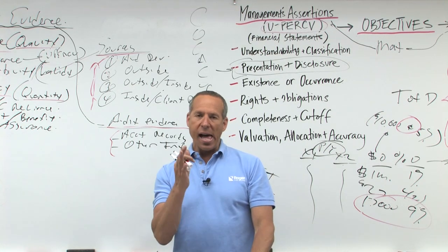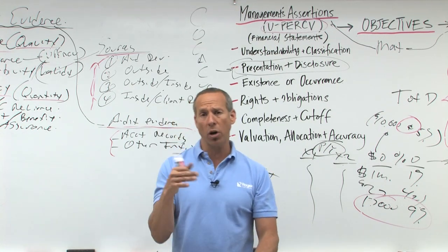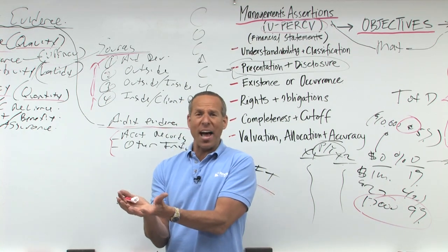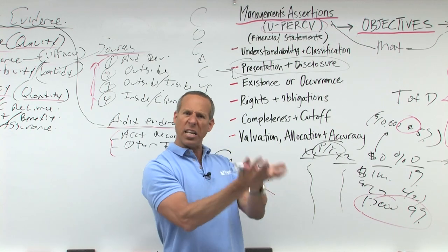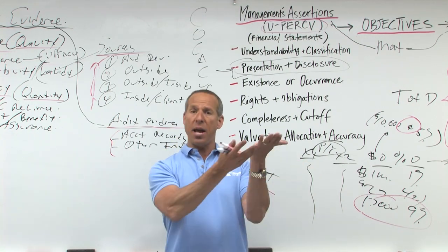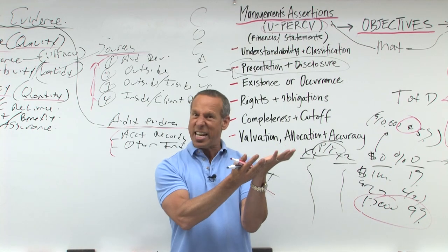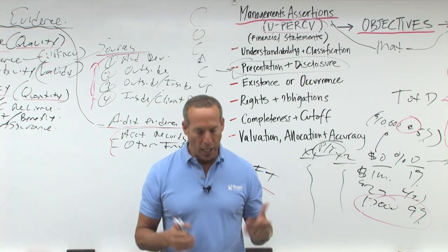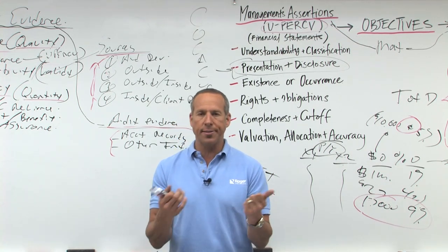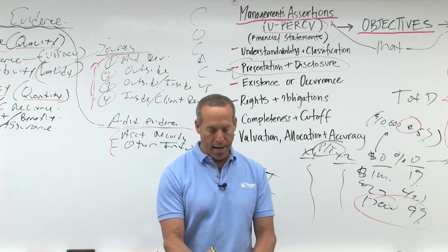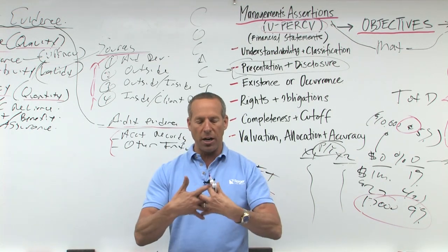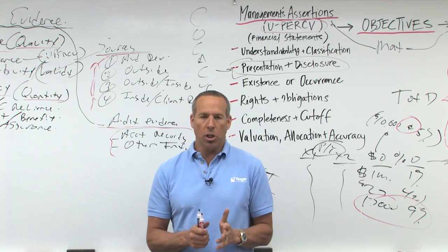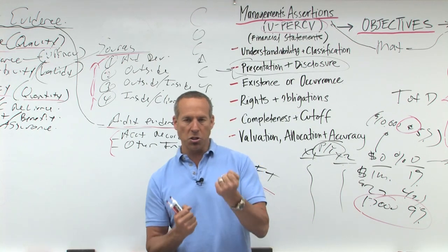Actual versus budget — what did you expect versus what did you get? Maybe things that don't change much, like payroll expense. Unless you hire or fire a lot of people, payroll should be pretty consistent. If everybody got a 3% raise, payroll expense should go up about 3%. If it goes up 13%, there may be a mistake. Financial versus non-financial — airlines might compare number of passengers versus total airline revenues. Current year versus prior year — for example, income statement amounts this year versus prior year.